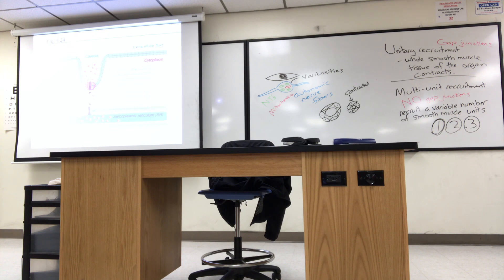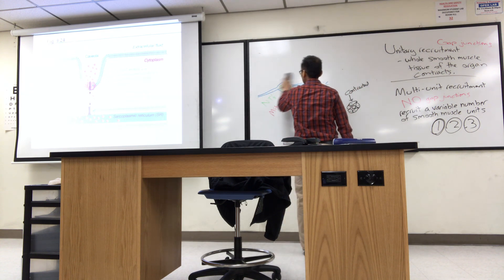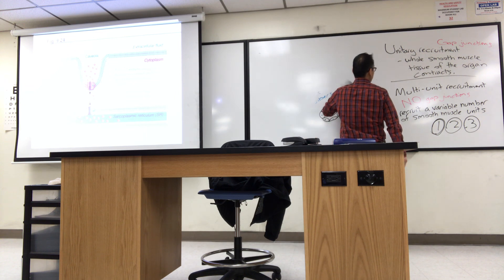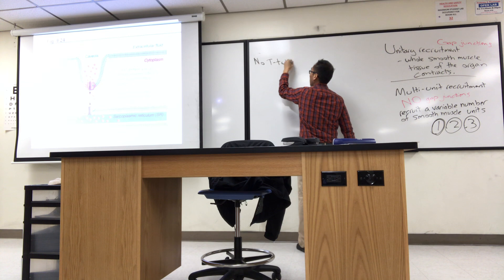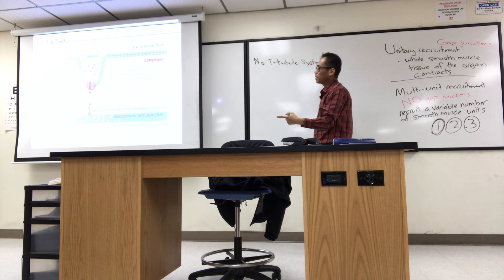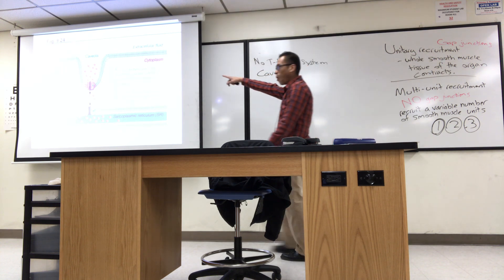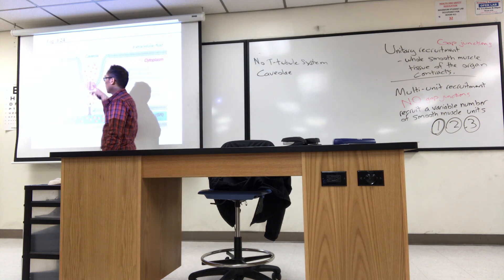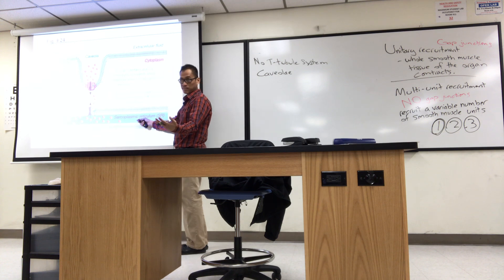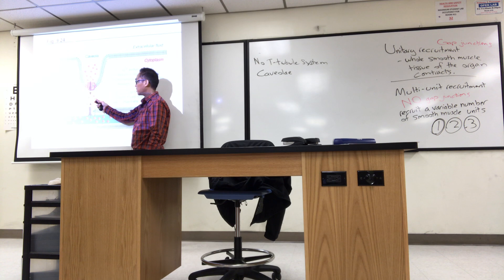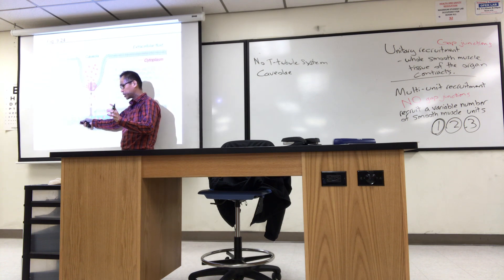Instead of a T-tubule system, smooth muscle has the caveola — a more simple, rudimentary structure. They have voltage-gated calcium channels which allow calcium to enter, triggering the release of more calcium. The calcium that enters isn't enough alone to get the muscle to contract — it's a trigger — and the larger calcium release from the SR is what actually gets the muscle to contract and achieve that spiral appearance.